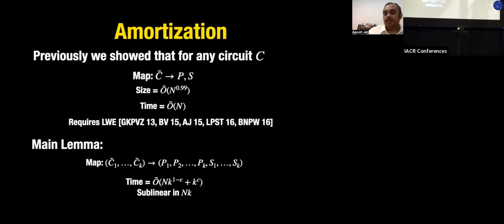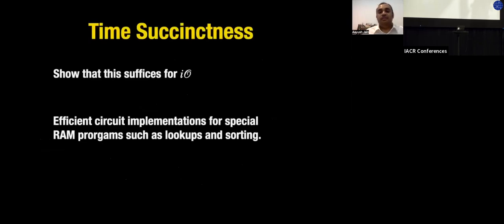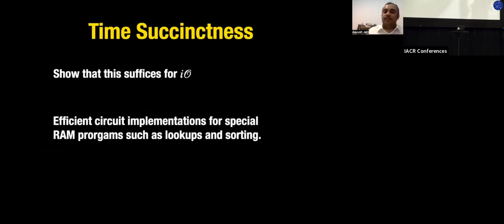We come up with a way to pre-process such that the time is n·k^{1-ε} + poly(k) for some ε > 0. This saving in k is enough to get us all the way to IO. The key argument is combinatorial and relies on exact circuit implementations of specific RAM programs such as lookups and sorting networks.